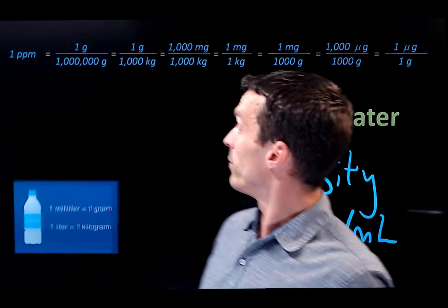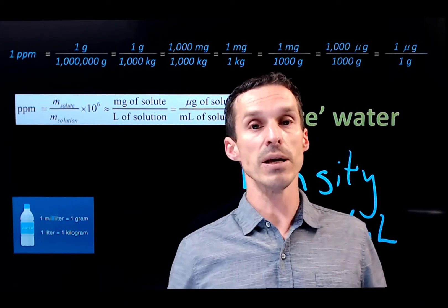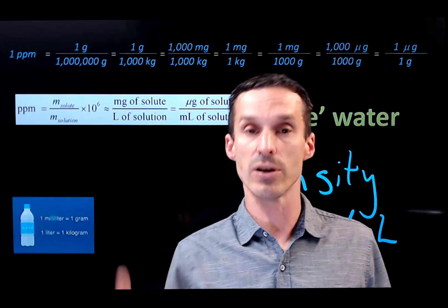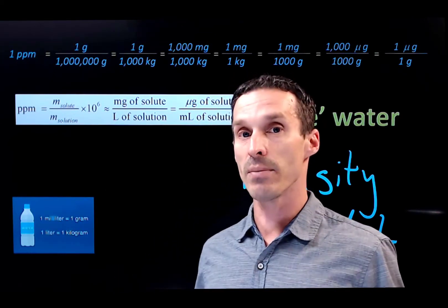So that's why we give you these equations here. When we talk about parts per million, strictly speaking, it's just mass divided by mass. The mass of stuff, the things, the analytes that you're interested in, divided by the total mass. And then that fraction is multiplied by a million.